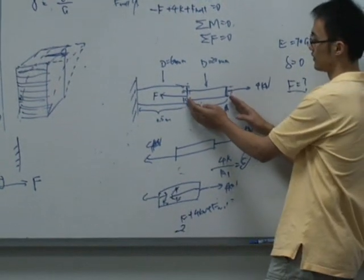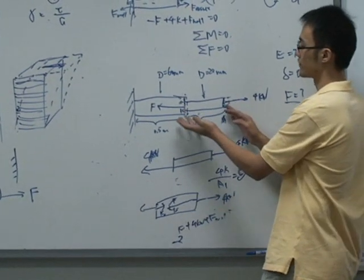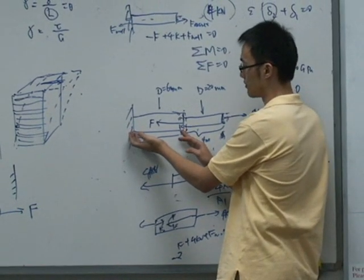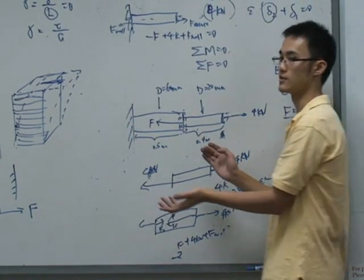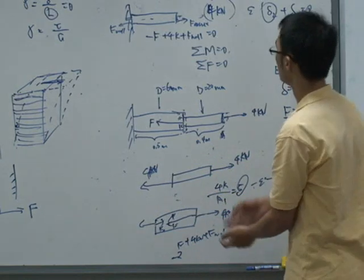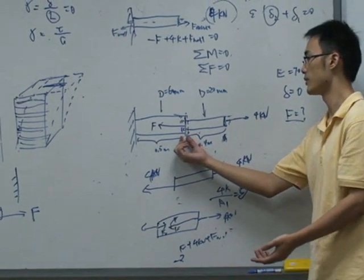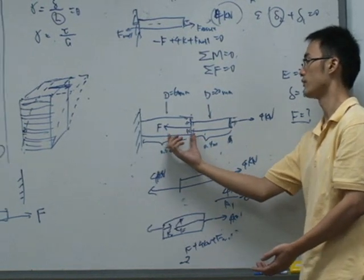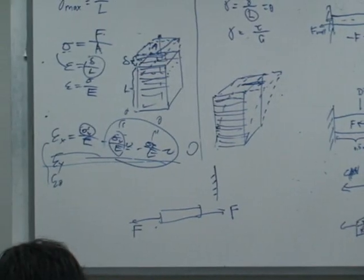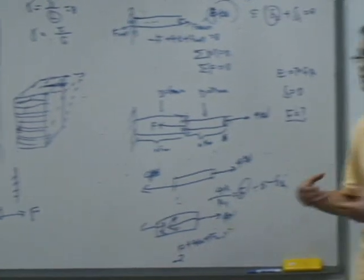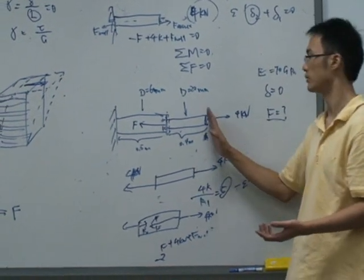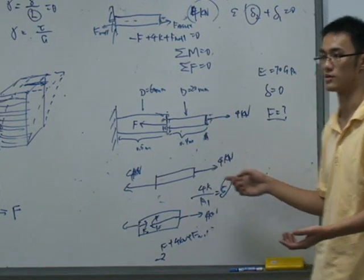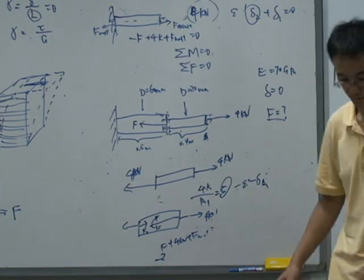Find out the deformation of the first part. How to find? Use force analysis. Find out the deformation of the second part, also using force analysis. You add up the deformation of the first part, then you also add up the deformation of the second part. Then the result should be zero in order to maintain this point and it will remain in the origin position. This will be the concept.